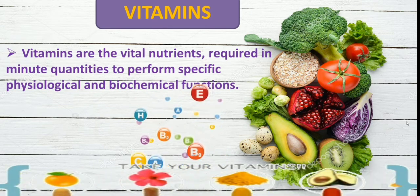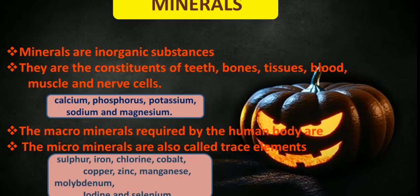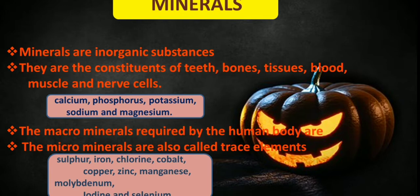Then, minerals. Minerals are inorganic substances required as essential nutrients by organisms to perform various biological functions necessary for life. They are also constituents of teeth, bones, tissues, blood, muscles and nerve cells. Minerals are solid inorganic substances that form crystals, classified depending on how much of them we need. There are trace minerals such as molybdenum, selenium, zinc, iron and iodine — required in only a few milligrams or less.